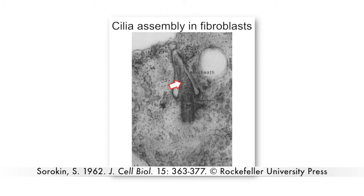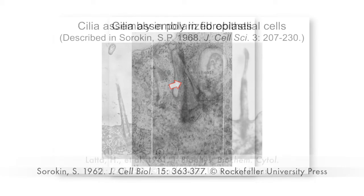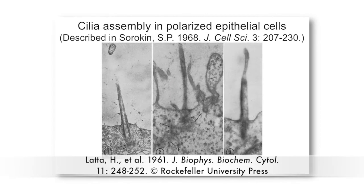The microtubule-based axoneme also starts to form inside the cell before the ciliary vesicle fuses with the plasma membrane. In polarised epithelial cells, however, the centrosome lacks a large ciliary vesicle and it moves to the apical surface before it begins to assemble the axoneme.